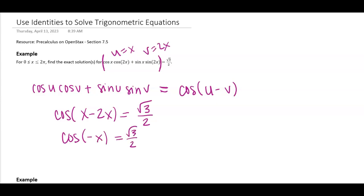And remember, cosine is an even function. So the cosine of negative x is the same as the cosine of x.